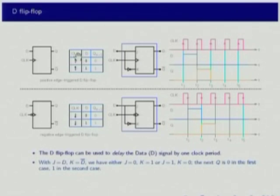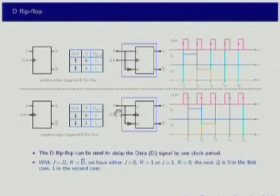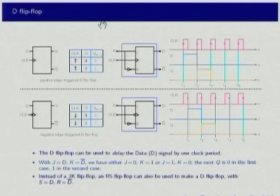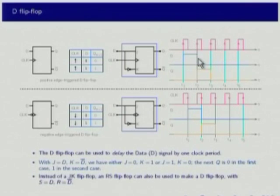There is then the D flip-flop, which is a special case of a JK flip-flop with K being the inverse of J. It can come in positive or negative edge triggered varieties. Looking at the JK flip-flop table, if this connection is made, only J equal to 1 K equal to 0 or J equal to 0 K equal to 1 entries are relevant. If D is 0 then Q(N+1) is 0; if D is 1 then Q(N+1) is 1. The D flip-flop essentially causes a delay of one clock pulse between input and output.